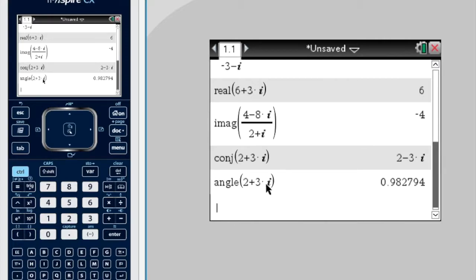So if you were to graph 2 plus 3i, the angle that it makes with, if you do it from the origin, the angle that it makes with the positive x-axis would be 0.98 radians, which is almost 60 degrees.